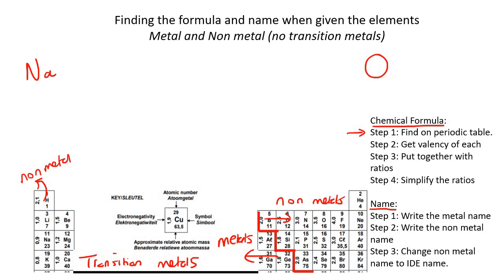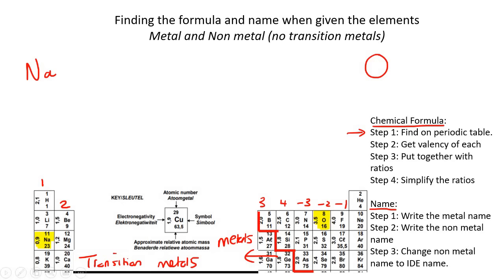To get the chemical formula, step one: go find them on the periodic table. Here is Na, and here is oxygen. Step two: get the valency. Valency goes: one, two, three, four, minus three, minus two, minus one. So Na has a valency of plus one, and O is minus two.